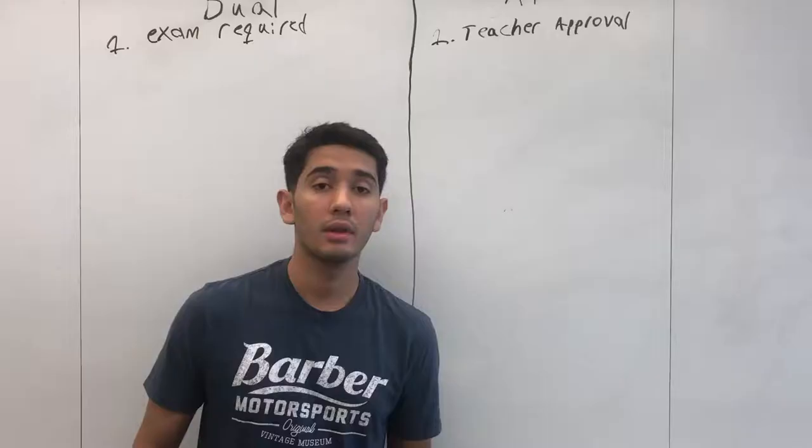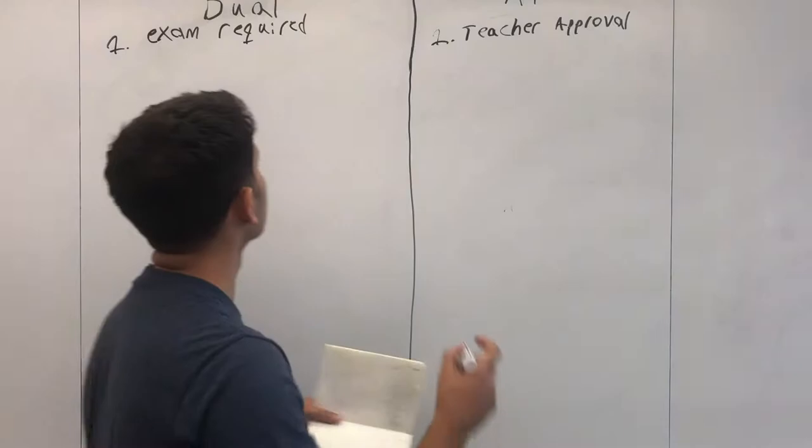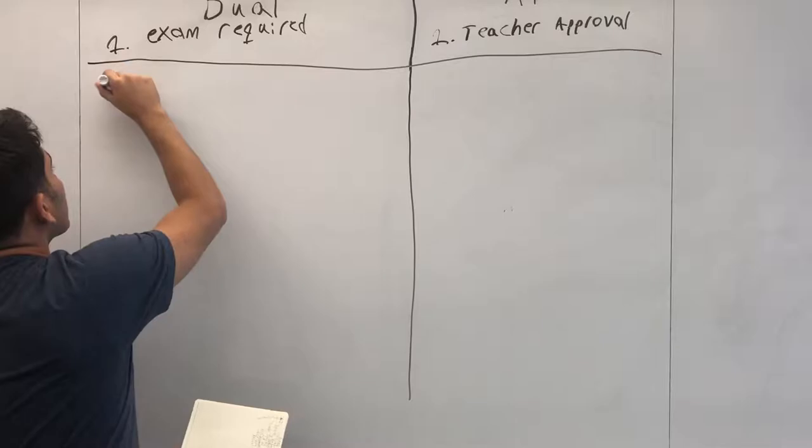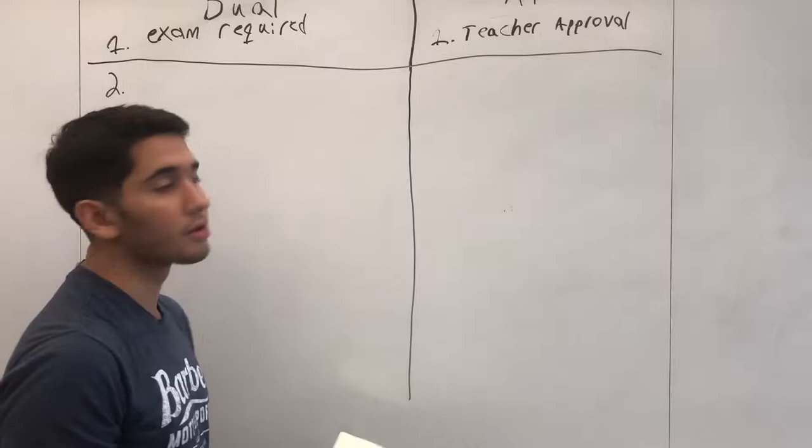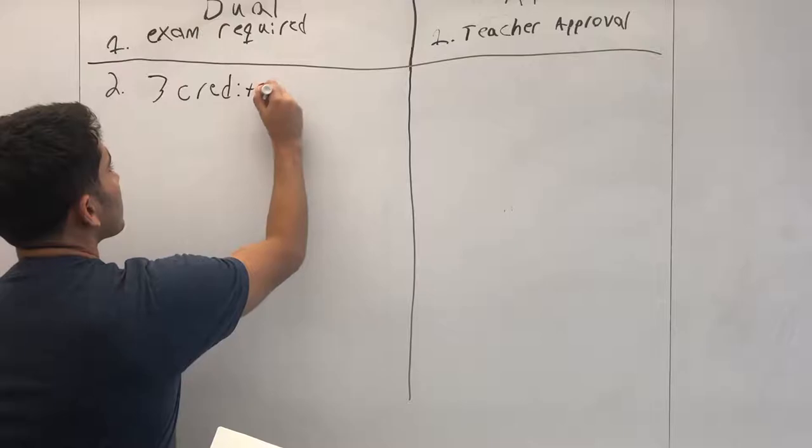Now what we're going to look at is how much they're worth in terms of credits. College is based off credits, and for a dual enrollment class you're in a class out of college so it's going to be worth the full three credits. Now for AP it's the same thing, it's going to be worth three credits.